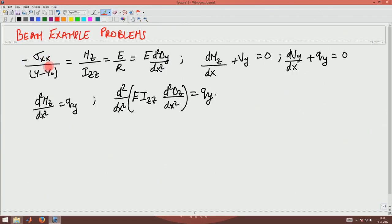Welcome to the 19th lecture of Mechanism of Materials. The last lecture we derived the governing equations for a beam bending problem. The equation that we derived was minus sigma xx by y minus y not equal to Mz by Izz equal to E by R which is E d square delta y by dx square where R is the radius of curvature.